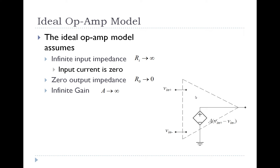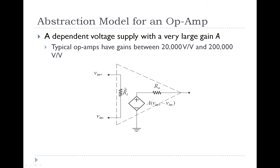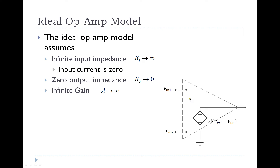What we're going to use in this class is the ideal op-amp model. We're going to simplify the op-amp model even further, assuming that there is an infinite resistance between the input terminals — meaning no current will pass through between the input terminals. The other assumption is that there's no output resistance, which in theory means the op-amp could supply an infinite amount of current. And finally, instead of the gain factor being 20,000 to 200,000 volts per volt, we're going to assume that it's infinite.